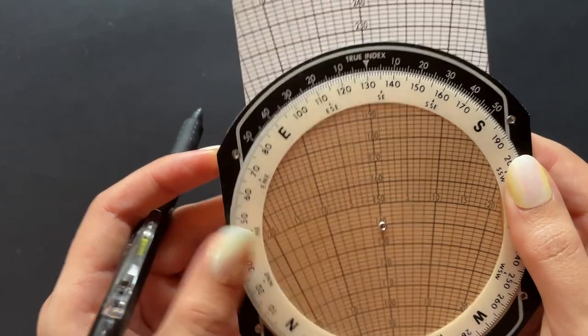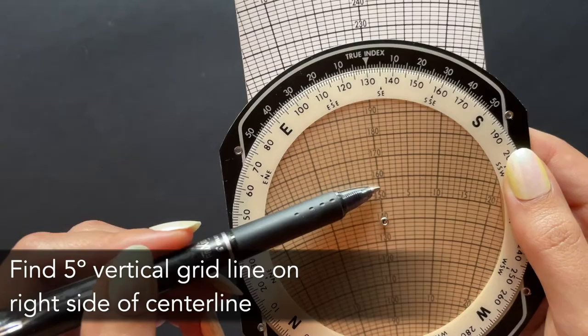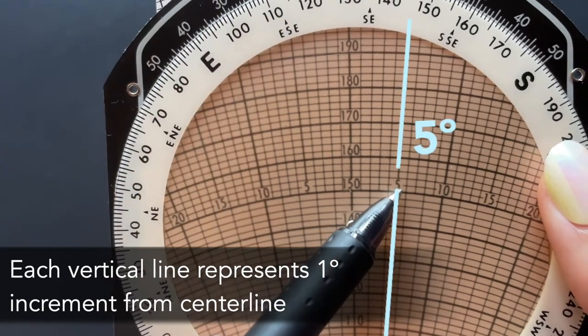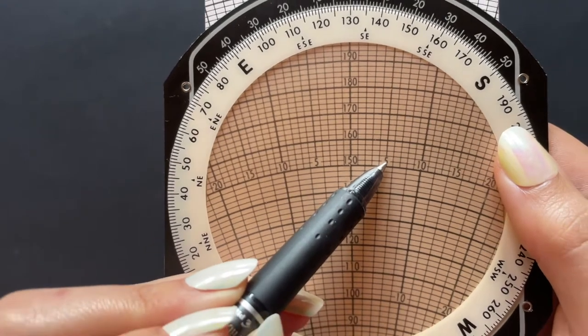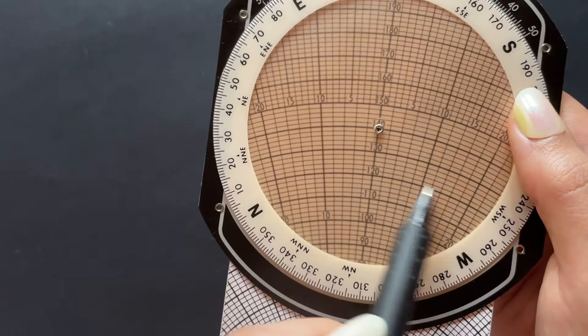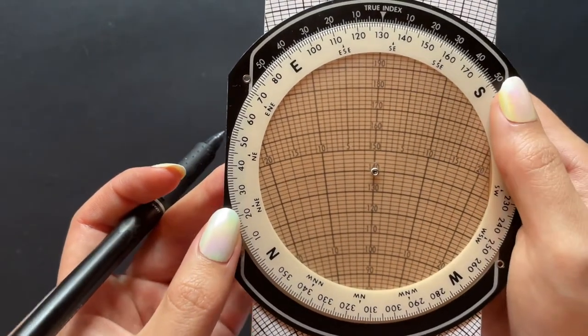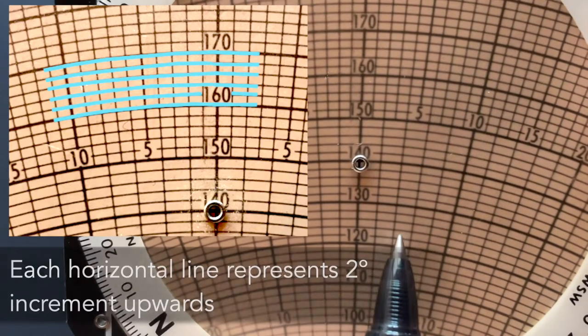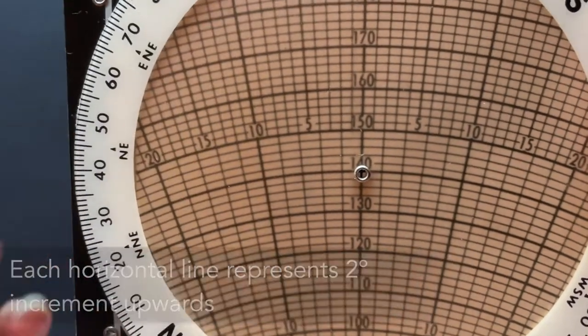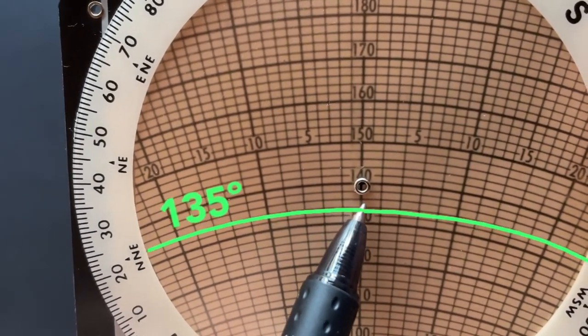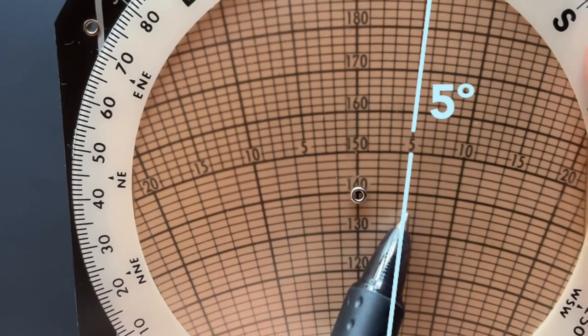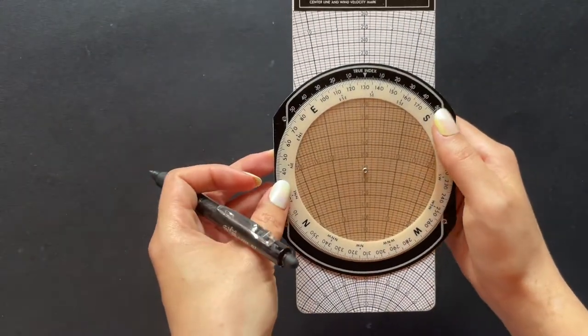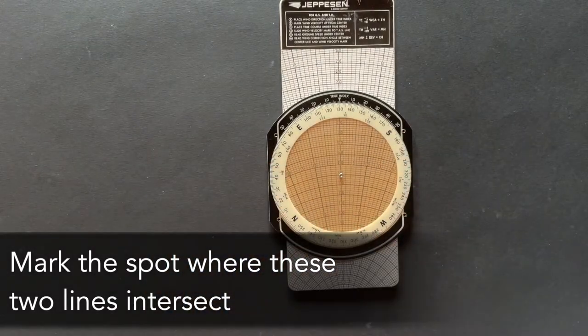So with that 5 degree crosswind correction from the right side, we will be looking for the 5 degree vertical line on the right side from the center line here. Each one of these fine lines going vertically represent a single degree increment. There's our 5 degree line. Keeping note of that, we will want to intersect that line with a horizontal line representing our given true airspeed, which in this case, we have 135 knots. Each one of these fine horizontal lines represent a 2 degree increment. So it looks like our 135 line would be right here, right in the middle. Where these lines intersect is what is important to us. We will want to make a precise dot to mark the point where these lines intersect.